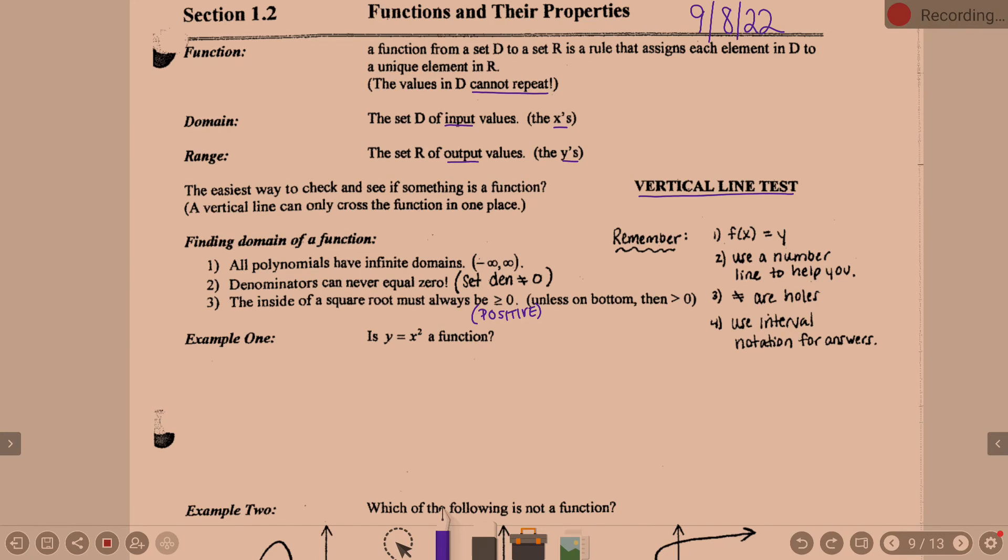Now, example one. Is Y equals X squared a function? Yes. Why? Because it makes a parabola. If it's Y equals X squared, it's a function.